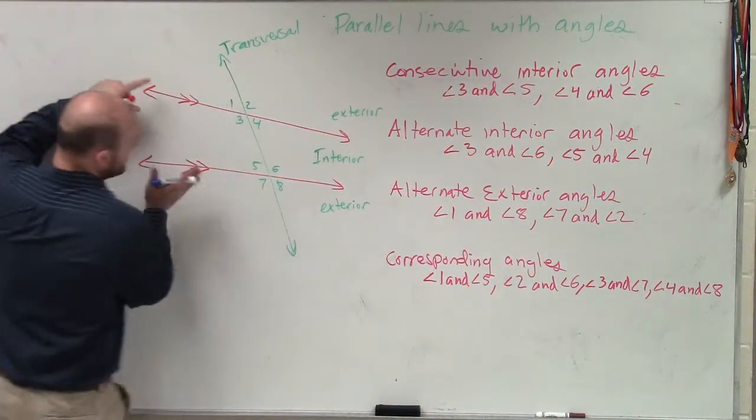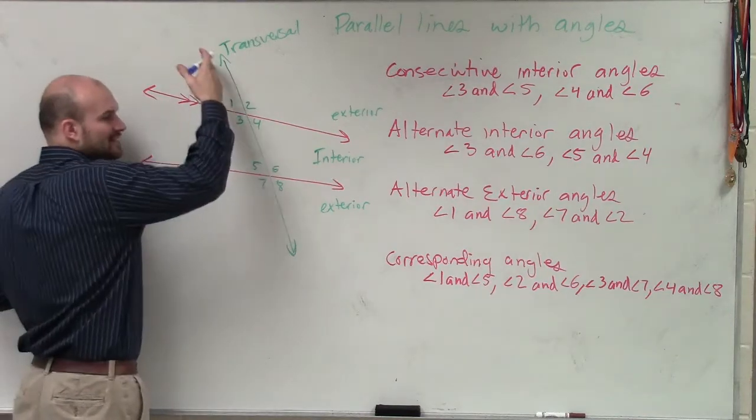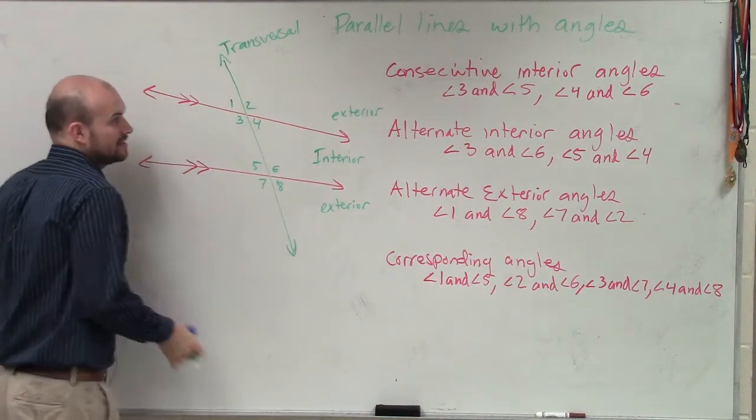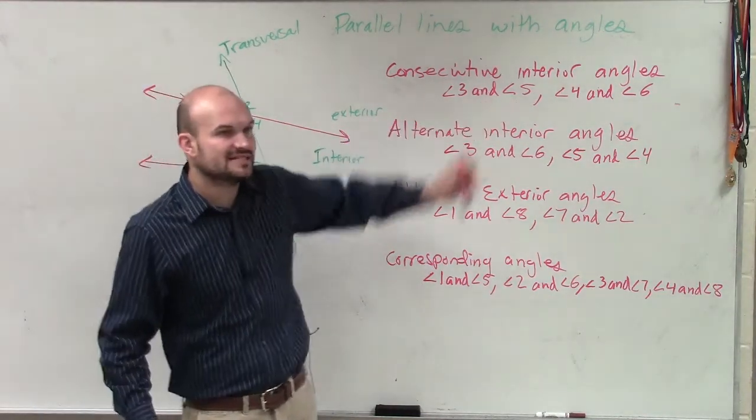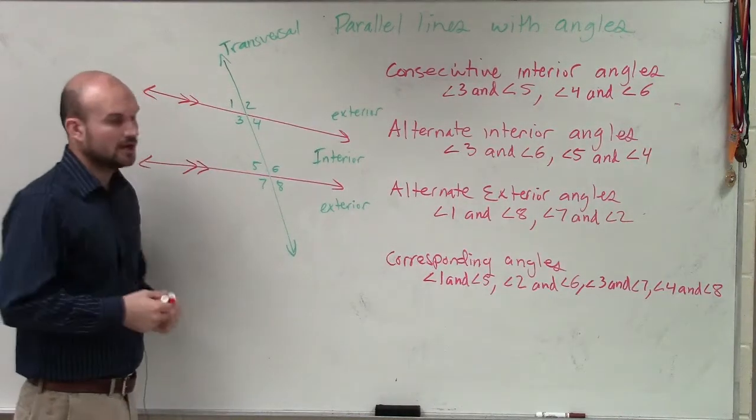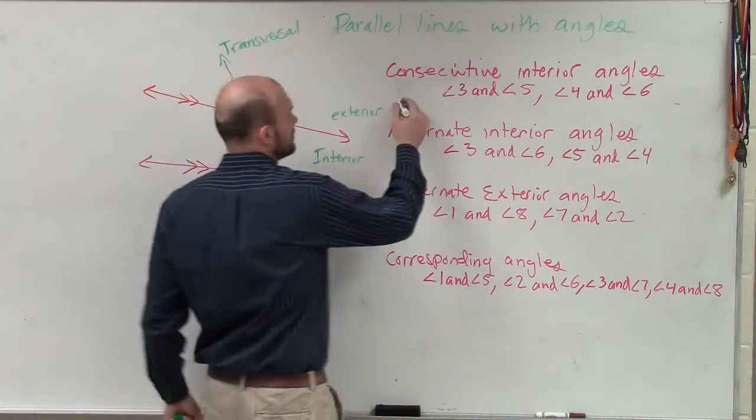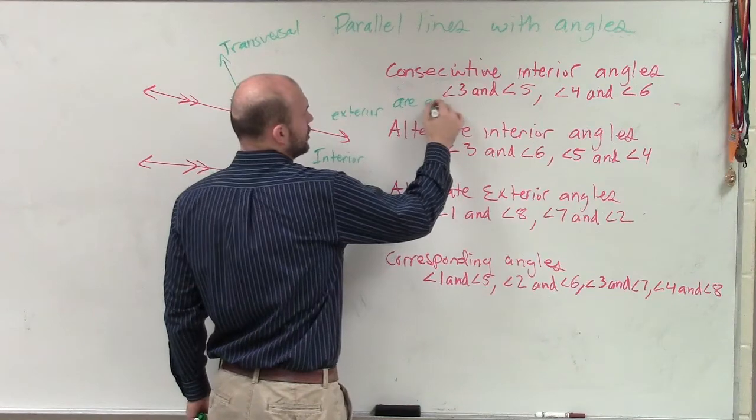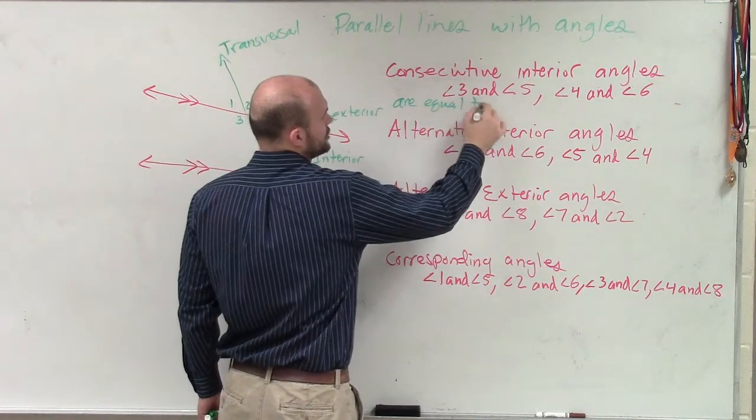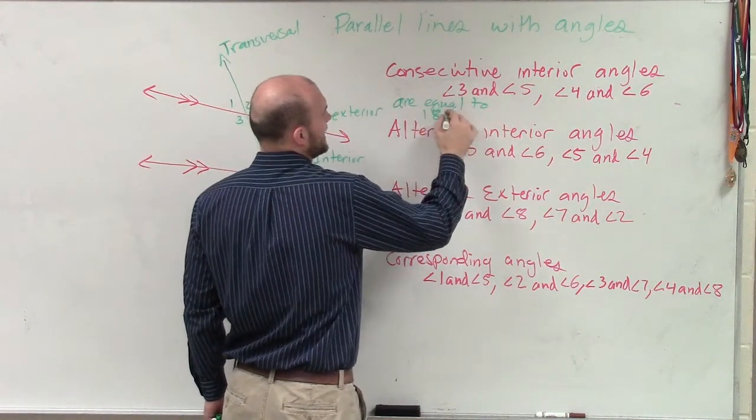When we have parallel lines and we have a transversal that intersects it, our consecutive interior angles are equal to 180 degrees.